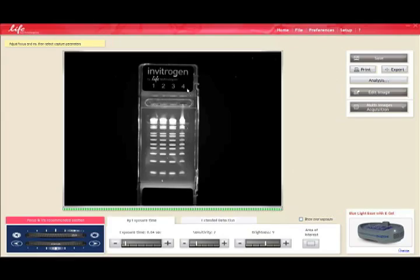This is the image capture software, and here's the gel. And you can actually use the controls here, just like on the camera hood, for the focus and the iris. You can play with the exposure setting, you can look at sensitivity, you can play with the brightness, and make other edits to the image. You can take multiple acquisitions, and ultimately you can save the image, print it or export it.